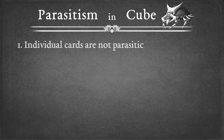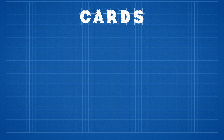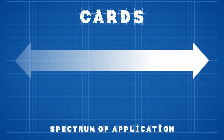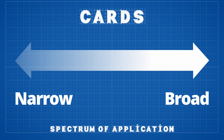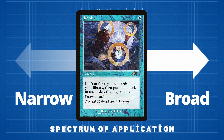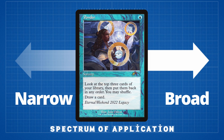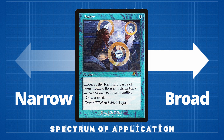To better understand parasitism, let's look first at the roles that individual cards play within archetypes. Individual cards should not be considered parasitic — instead, individual cards fall along a spectrum of having either narrow or broad applications. Let's take for example a well-known card, Ponder, and see where it falls on this scale. Ponder is a sorcery for one blue that says: look at the top three cards of your library, then put them back in any order. You may shuffle, and then draw a card.